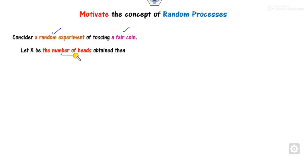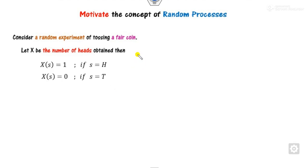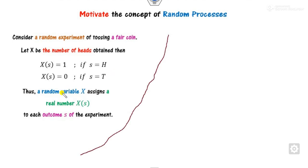What is the motivation behind the random process? If you are working on tossing a coin or any random experiment, let X be the number of heads obtained. The outcomes are either head or tail. If I denote small s as the set of outcomes, then X is my random experiment — either 1 or 0 for head or tail. This is a random variable assigning real numbers to each outcome. Similarly, if you throw a dice, the outcomes are 1 through 6.